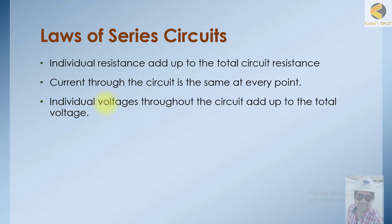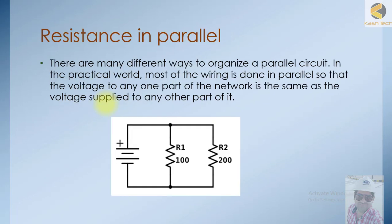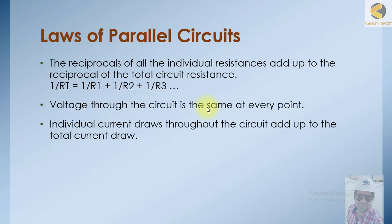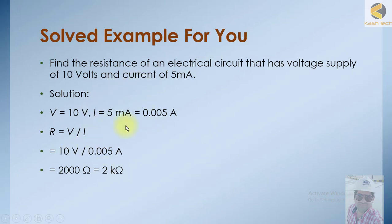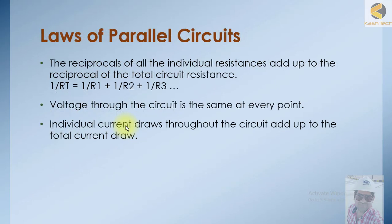Then we have the case of resistance in parallel. In the practical world, most wiring is done in parallel so that the voltage to any point of the network is the same as the voltage applied to any other part. We will discuss parallel circuit laws: how to add resistance in parallel, what happens to voltages in a parallel circuit, how to add currents, and we will discuss KCL — Kirchhoff's Current Law. We will also solve some example questions.